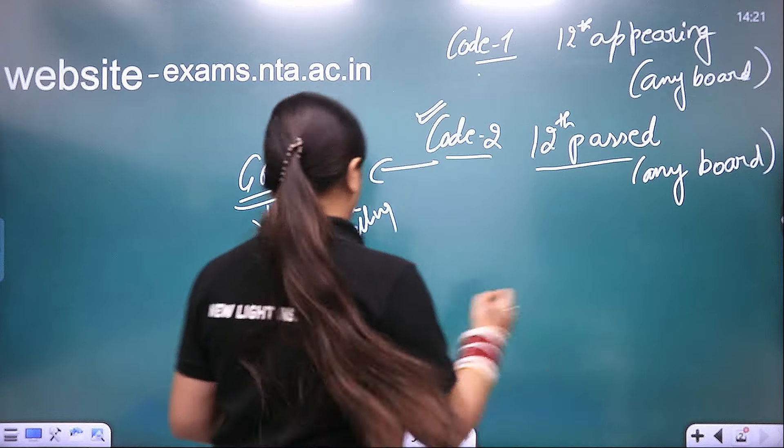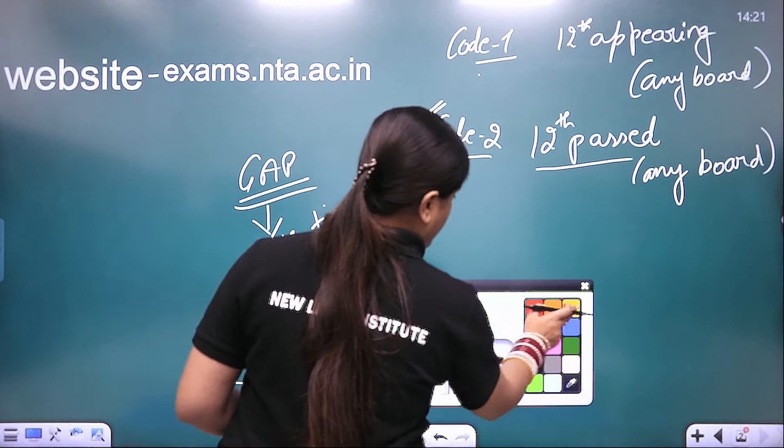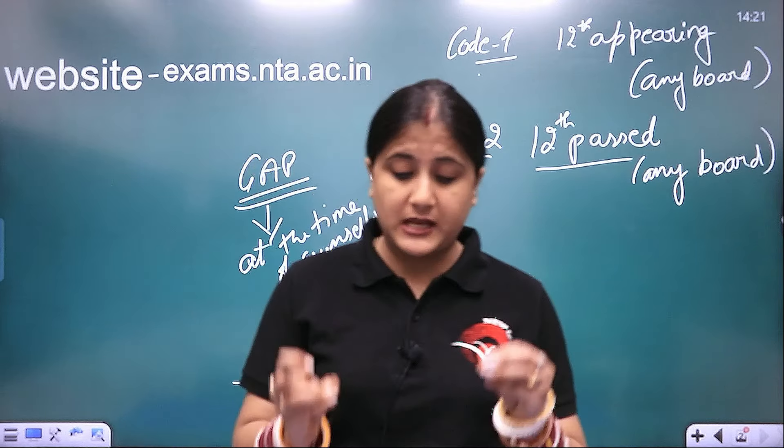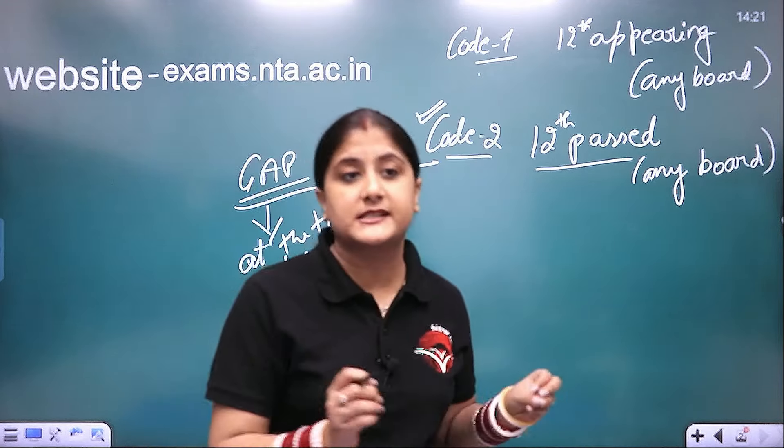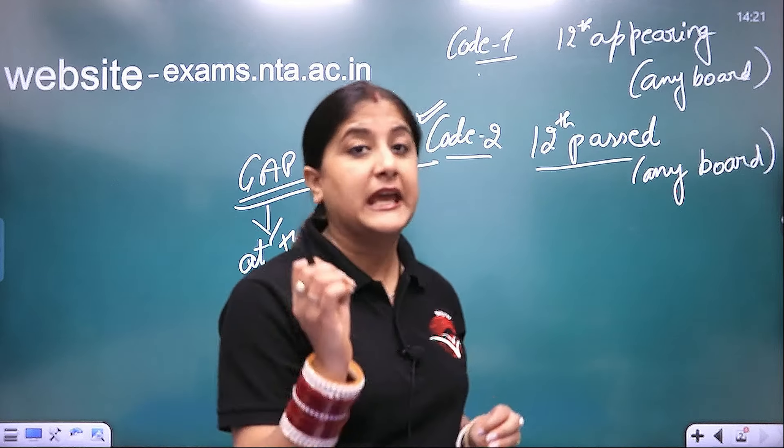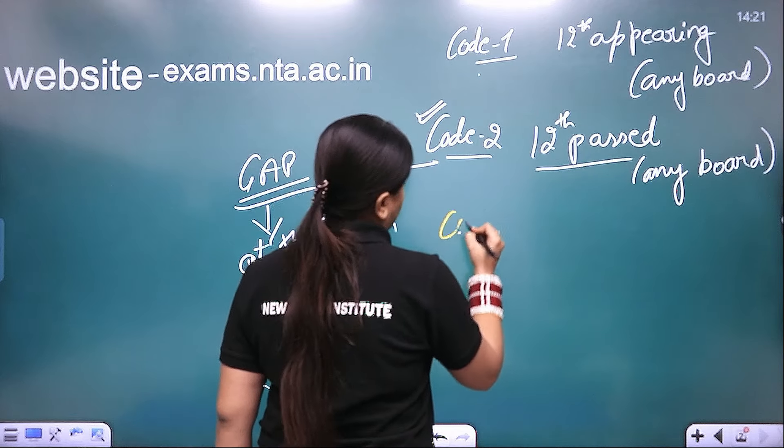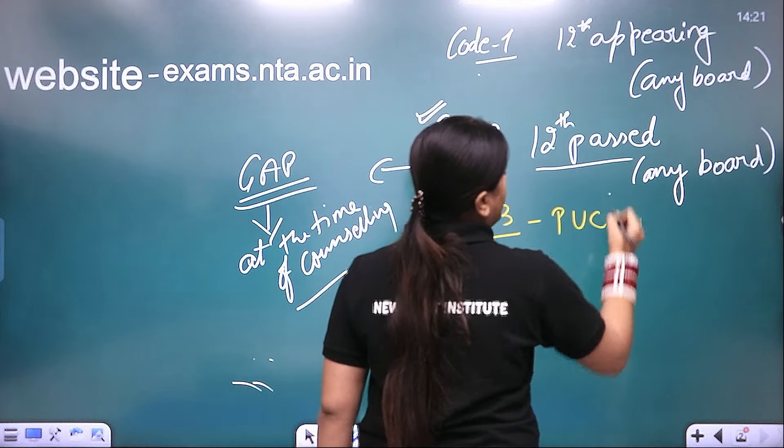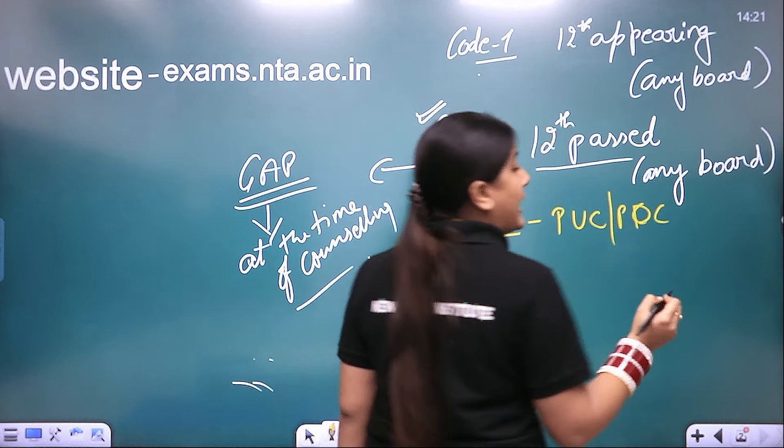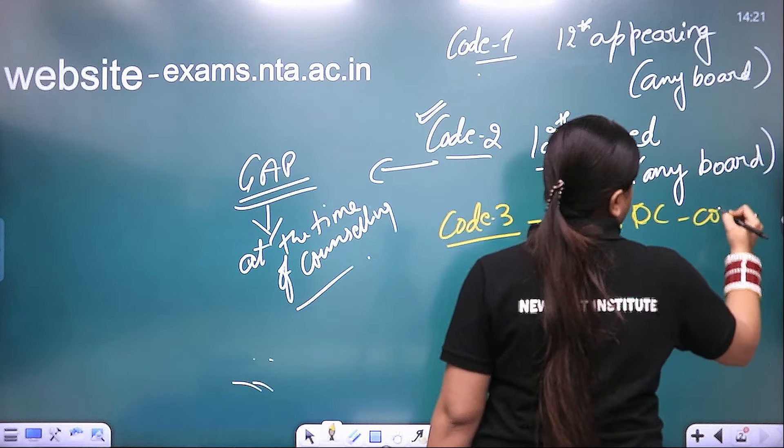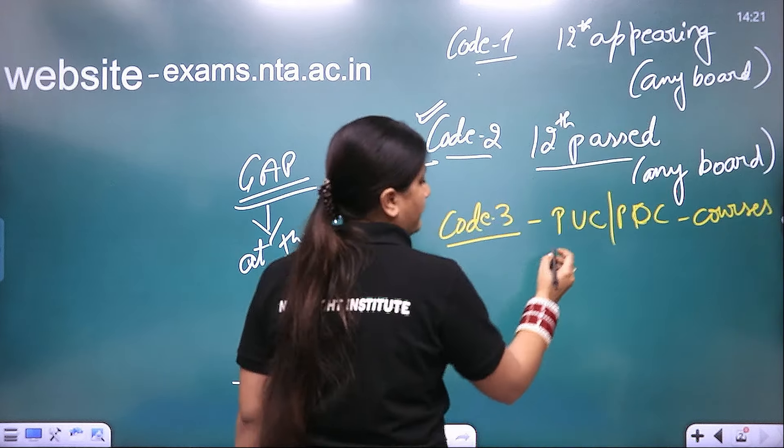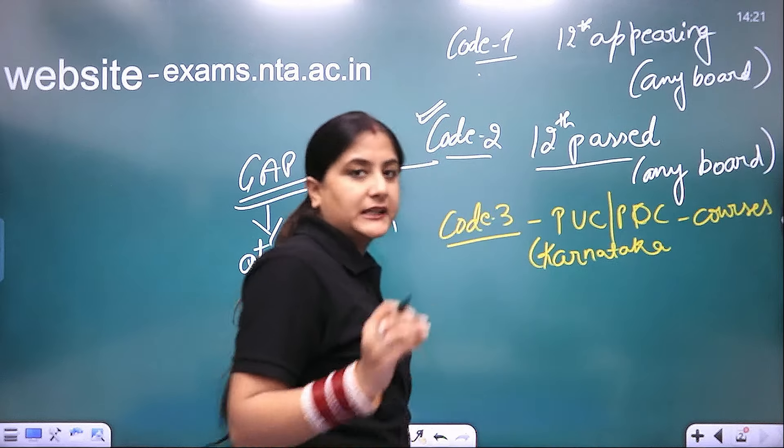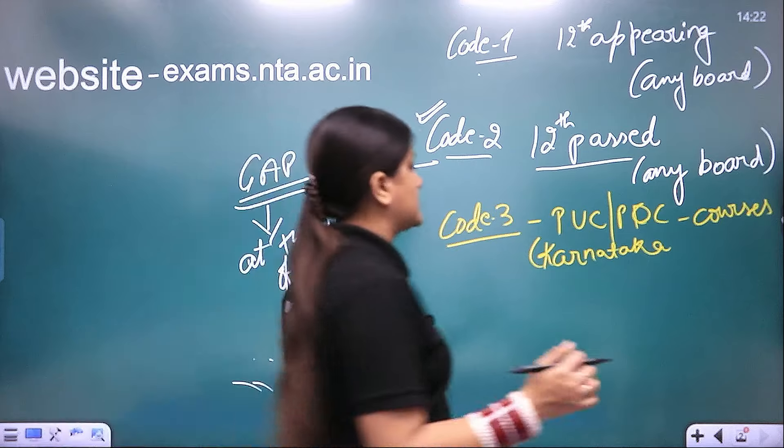Now let's talk about code 3. If we talk about code 3, let me tell you students, students who have PUC or PDC courses which are available in Karnataka state. If you have completed PUC or PDC courses, you will use code 3. Code 3 is basically used by Karnataka board students. If you have completed PUC or PDC courses, you will use code 3. And this is basically in Karnataka state board. So we have an easy option. If you have completed your 12th pass from Karnataka, then you can use code 3.